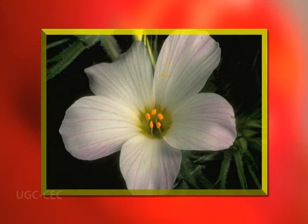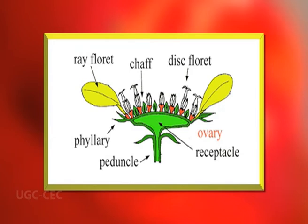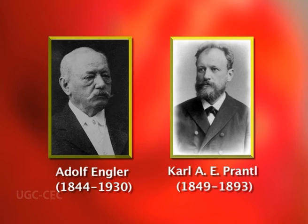Cucurbitaceae, which was placed in the Polypetali by Bentham and Hooker, is placed in Sympetalae on account of its gamopetalous corolla, overlooking its relationship with Passifloraceae. The placing of Compositae at the end of Sympetalae is justified on account of several advanced features such as the presence of a capitulum, zygomorphy of ray florets, unisexuality of ray florets, adaptation of pollination, and excellent means of dispersal of fruits.